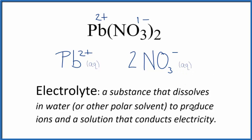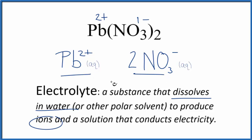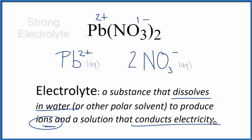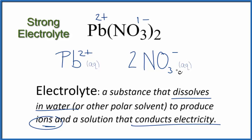Based on our definition for electrolytes, they dissolve in water or a polar solvent and they produce ions. These are ions — they produced ions. This dissociates completely since it's soluble in water, and as a result of these ions, this solution will conduct electricity. So in answer to our question, Pb(NO₃)₂ — lead-2 nitrate — is an electrolyte. And it's a strong electrolyte because these are all dissociated in the water and they will conduct electricity very well.